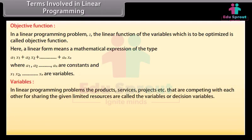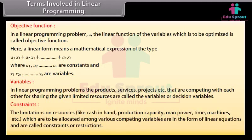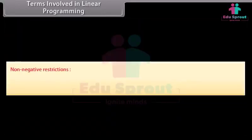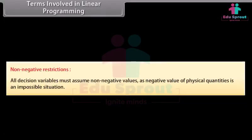In linear programming problems, the products, services, projects, etc., that are competing with each other for sharing the given limited resources are called the variables or decision variables. Constraints: The limitations on resources like cash in hand, production capacity, manpower, time, machines, etc., which are to be allocated among various competing variables are in the form of linear equations and are called constraints or restrictions. Non-negative restrictions: All decision variables must assume non-negative values as negative value of physical quantities is an impossible situation.